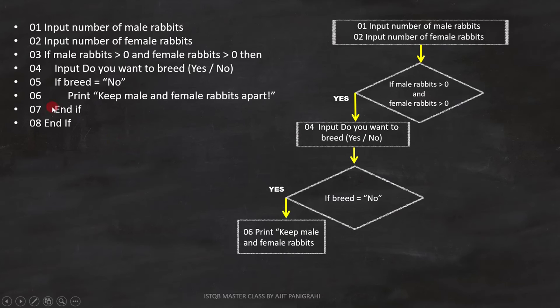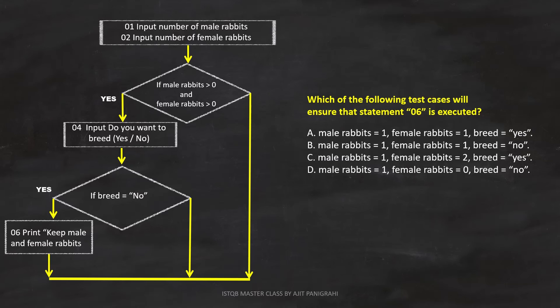Line number 7 and 8 are end if. That means both the conditions end here. This is how we can represent it on the flowchart. Now the flowchart is ready. Let's solve the question using this flowchart.